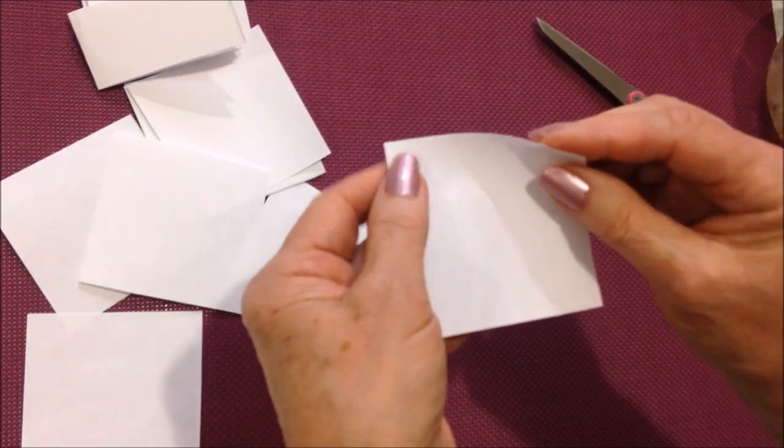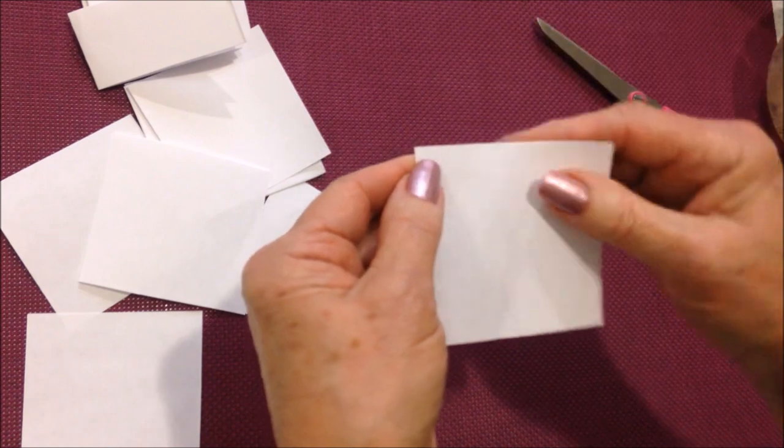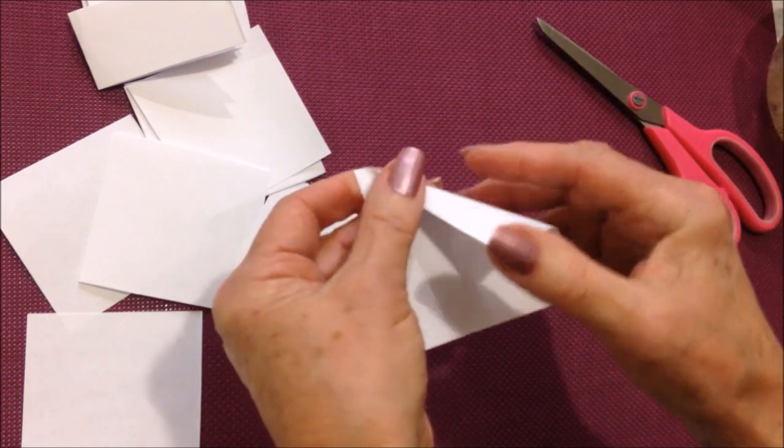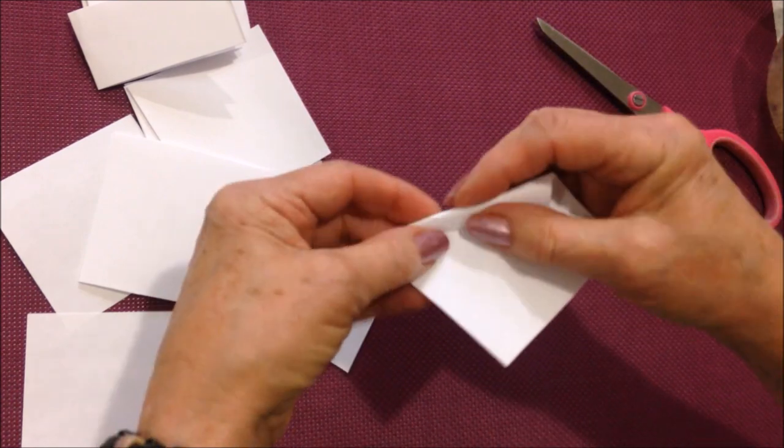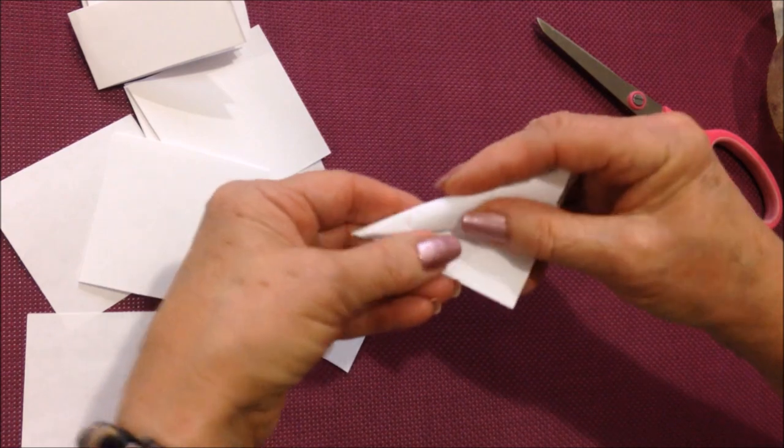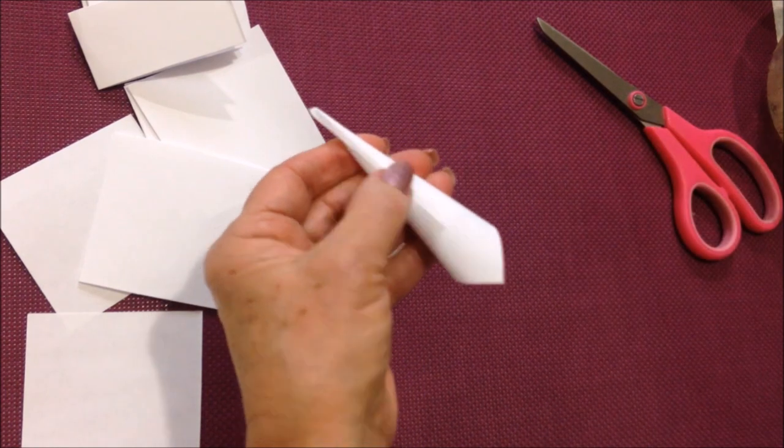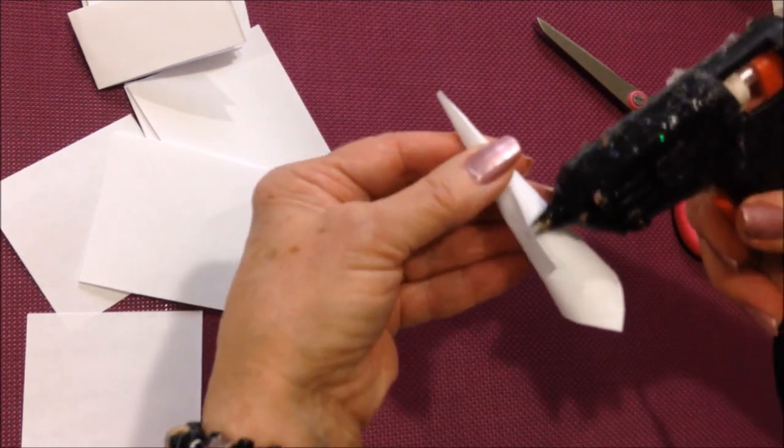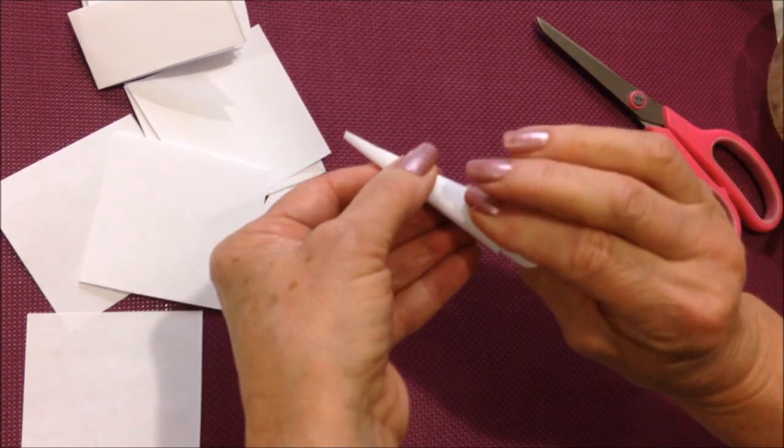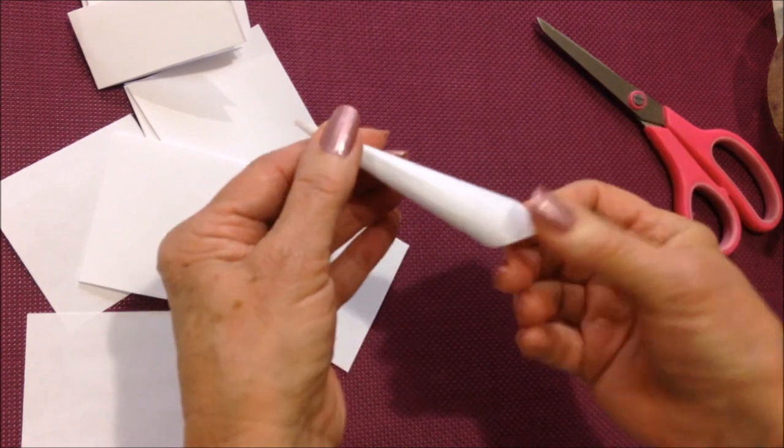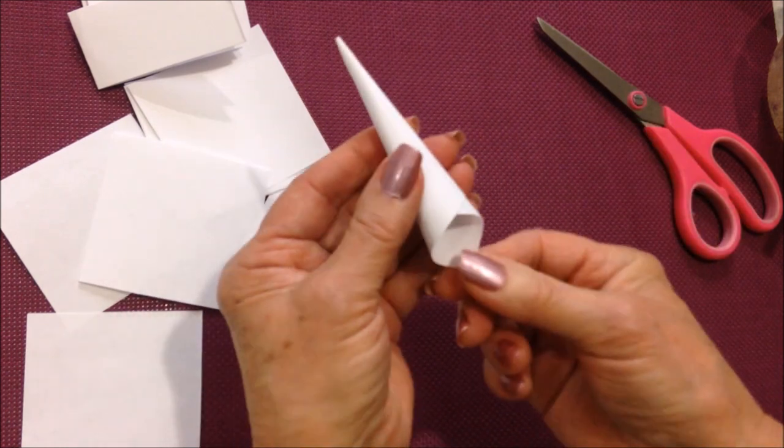And I'm going to fold these into cones. So I'm going to start at one corner like that and just get it started, and shape it into a cone. And put a little bit of glue there and just hold that until it's set. So I'm going to go ahead and make six of these.